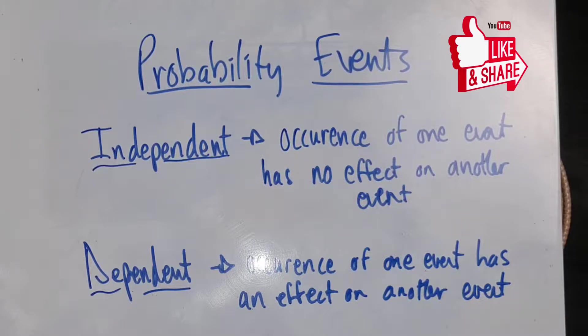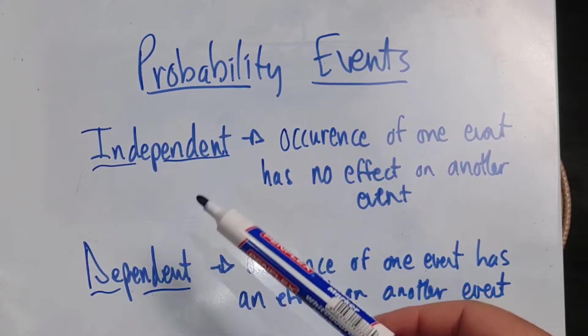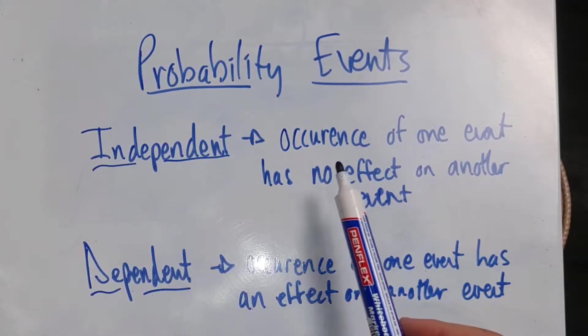Hi learners and welcome to today's video in which I'm quickly going to talk about the difference between these probability events, namely the independent event and the dependent event. So your independent event, with this event it's an occurrence of one event that has no effect on another event.